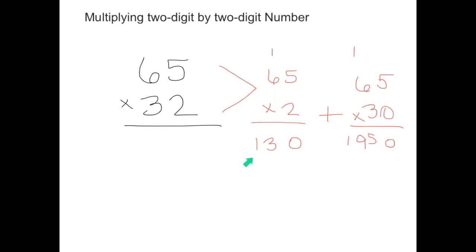Sixty-five times two equals one hundred thirty, and sixty-five times thirty equals one thousand nine hundred fifty. If I add these two numbers together, it will give me an answer that will be equal to the product of sixty-five times thirty-two.